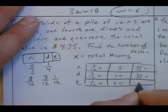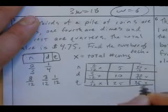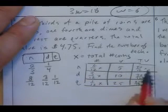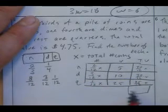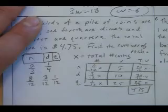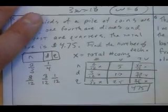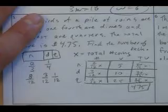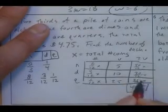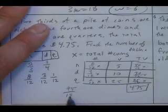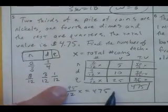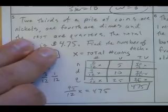So you multiply across. You get 40/12 X, 30/12 X, and 25/12 X. This is the total value. This plus this plus this equals 475. And there's your equation. Add these all up. You end up getting 95/12 X equals 475. Multiply both sides by 12. Divide by 95. You end up getting X.